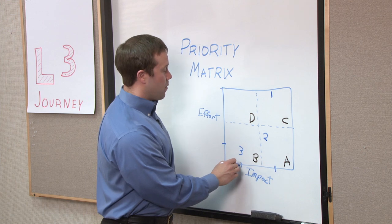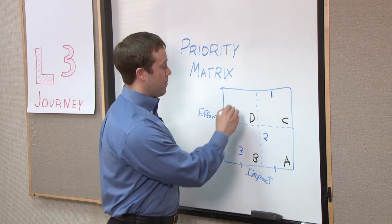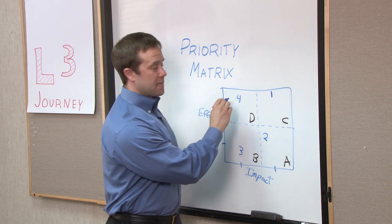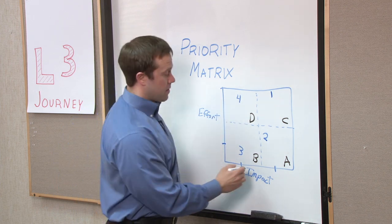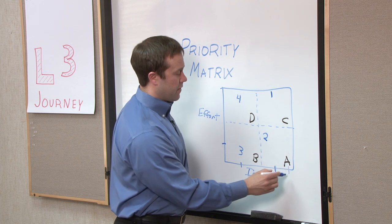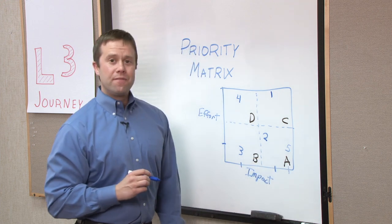Idea number four is low impact. And once we talked about it, we realized, boy, it's more complicated than we originally thought. It's going to be a lot of effort. And we put it up there. Our fifth idea, we talk about and everybody agrees that's going to have a phenomenal impact. And wouldn't you know, the effort is not going to be too great. So we'll put a five there.